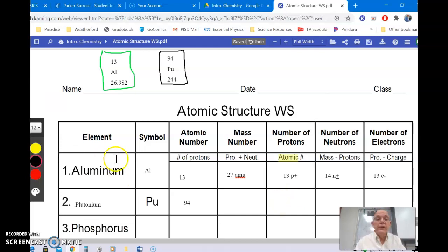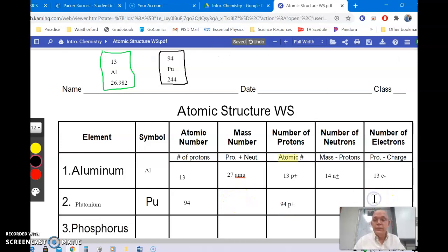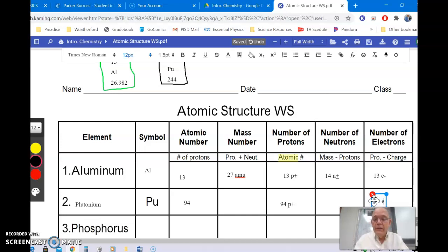And somehow I got into something else besides the text box, but there we go. So, this is 94 protons with a positive charge. And since it's neutral, as all these are going to be neutral, it is going to be 94 electrons with a negative charge.